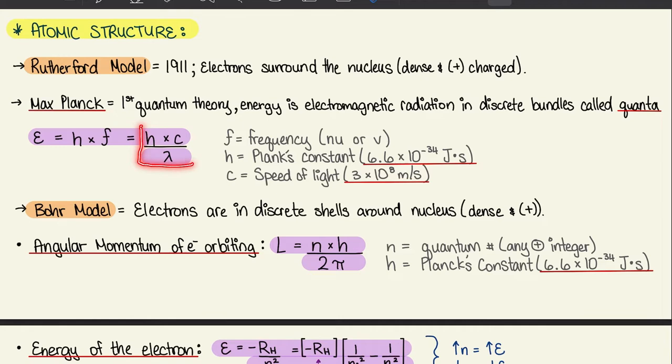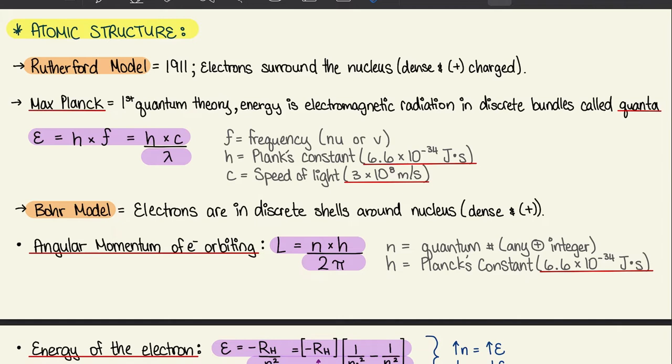Another way to illustrate this quantum theory — which we'll touch on in the physics chapter — is E equals H times C over wavelength, where H is Planck's constant and C is the speed of light. But for the chemistry part, just know that E equals H times F.